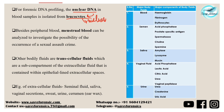Blood can be used for DNA analysis. Besides peripheral blood, menstrual blood is also a very potential biological evidence. Peripheral blood is the blood that circulates throughout the body, while menstrual blood is the blood that is shed along with the endometrium of the uterus during menstruation. It can be analyzed to investigate the possibility of sexual assault crimes. As forensic experts we must know how to distinguish peripheral blood from menstrual blood — menstrual blood is a fibrin degradation product, referred to as FDP, through which we can identify and distinguish it from peripheral blood.